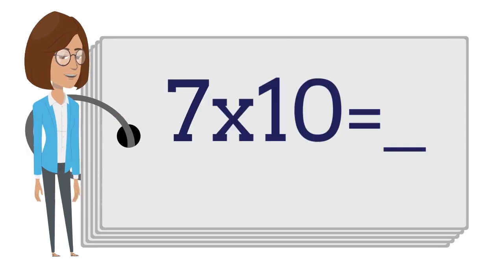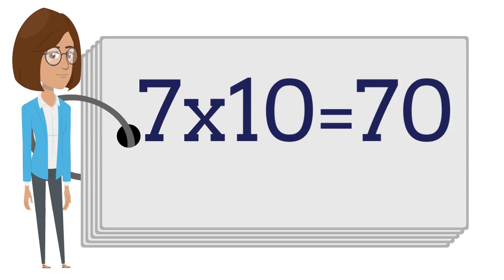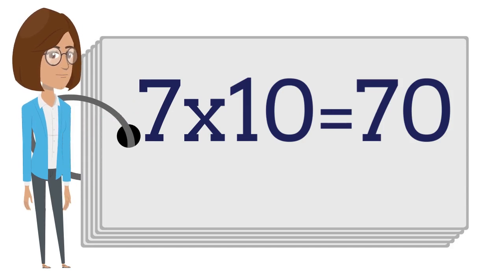7 times 10 is — say the answer out loud. 7 times 10 is 70.